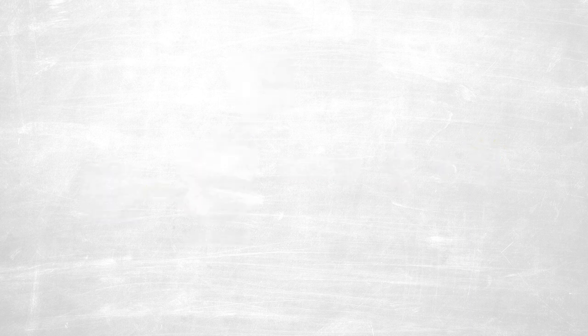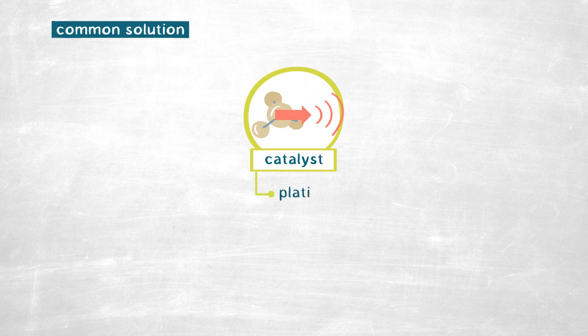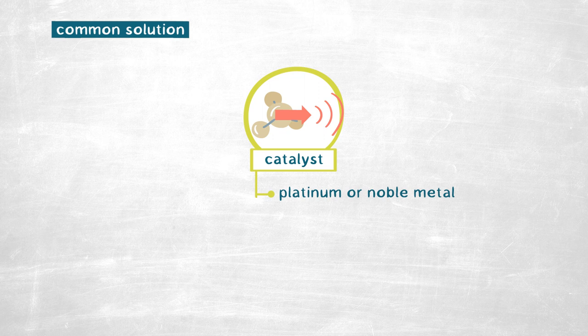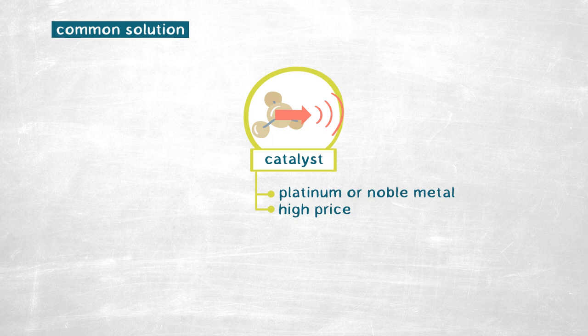One of the main challenges in this reaction is the component which facilitates the reaction. This component is called a catalyst. A lot of investigations use platinum as a catalyst or some other noble metals, but the problem with these materials is the high and volatile price that makes them a showstopper for fuel cells.